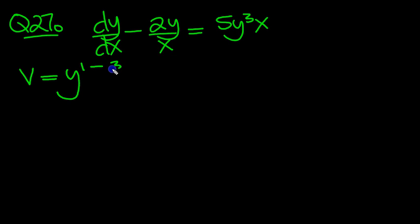The n value is 3 here, so that's equal to y to the minus 2, which we can write as 1 over y squared.